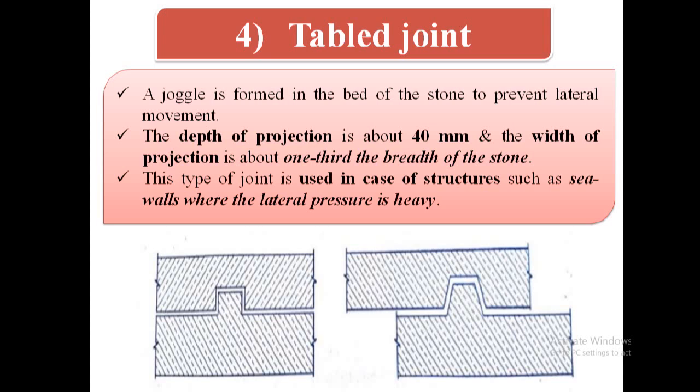This type of joint is used in the case of structures such as sea walls where the lateral pressure is heavy.